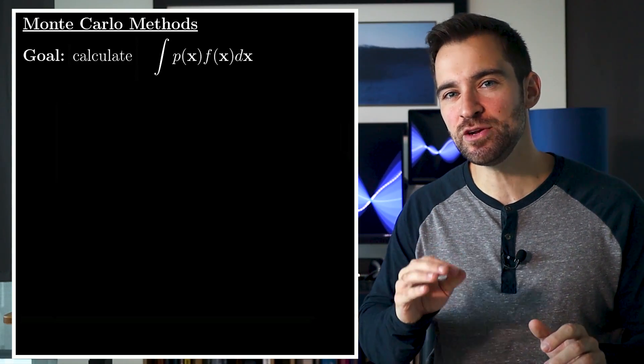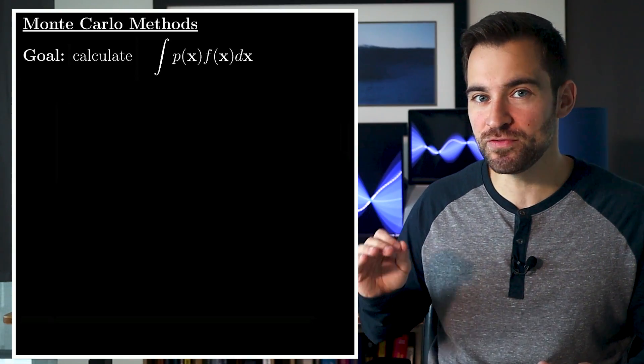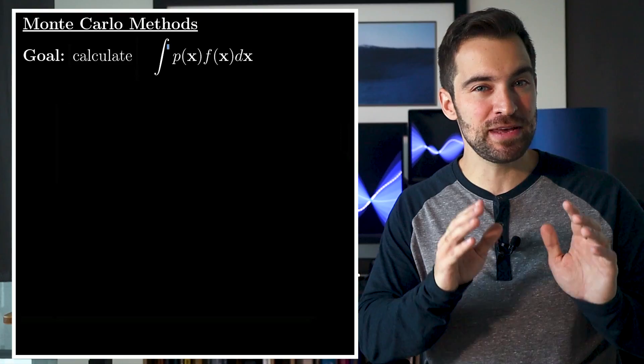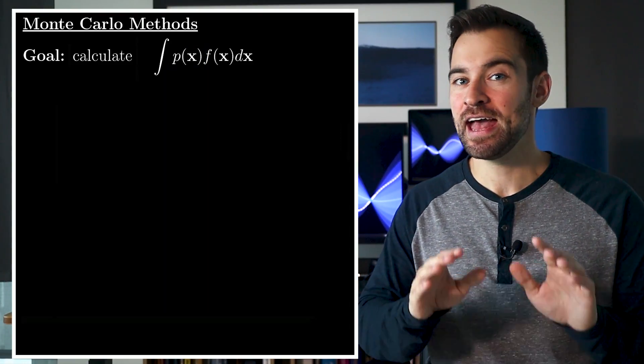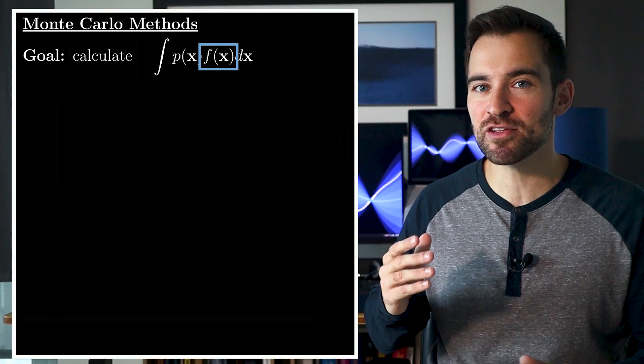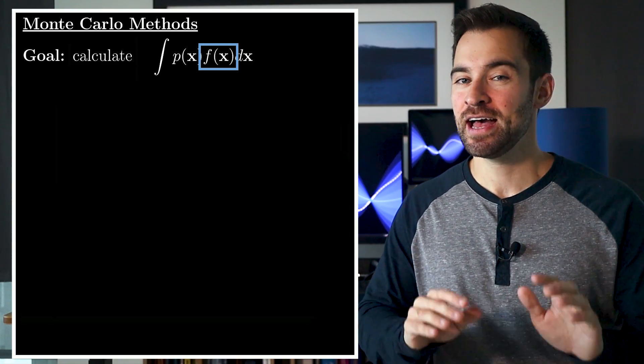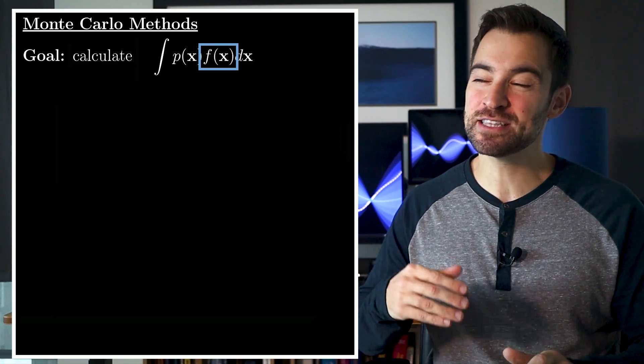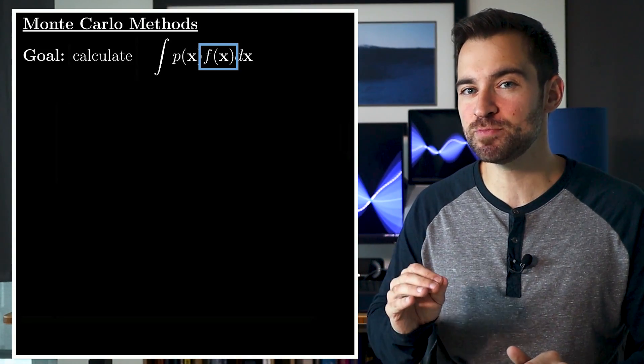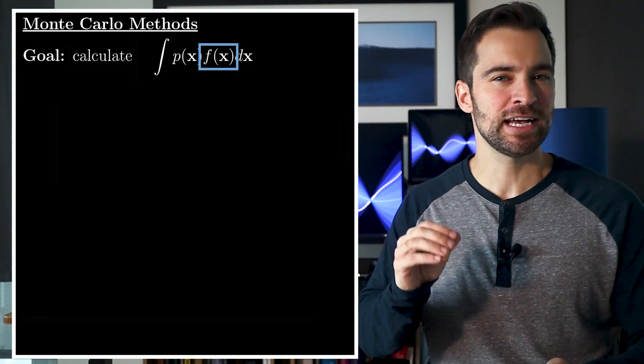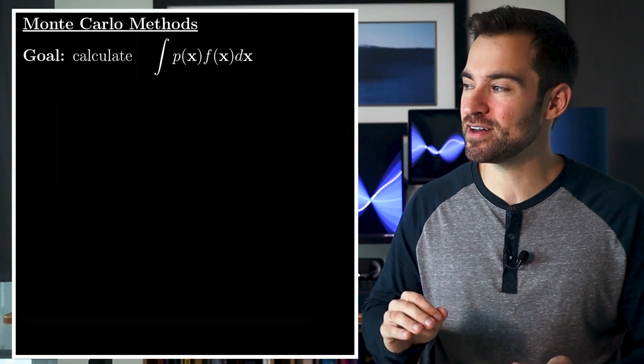Here, x is a continuous random vector, boldface means it's a vector, and p(x) is the probability density of x. f(x) is just some scalar function of x we happen to be interested in. Now, you should think of this as the probability weighted average of f(x) over the entire space where x lives. To communicate that, it's often written like this.